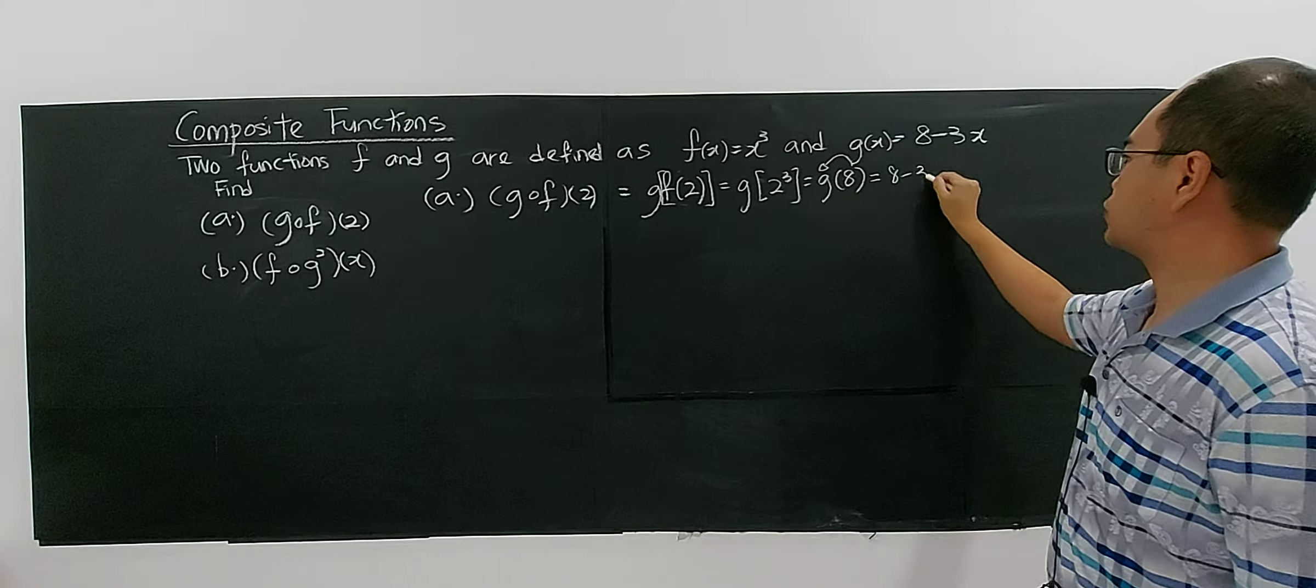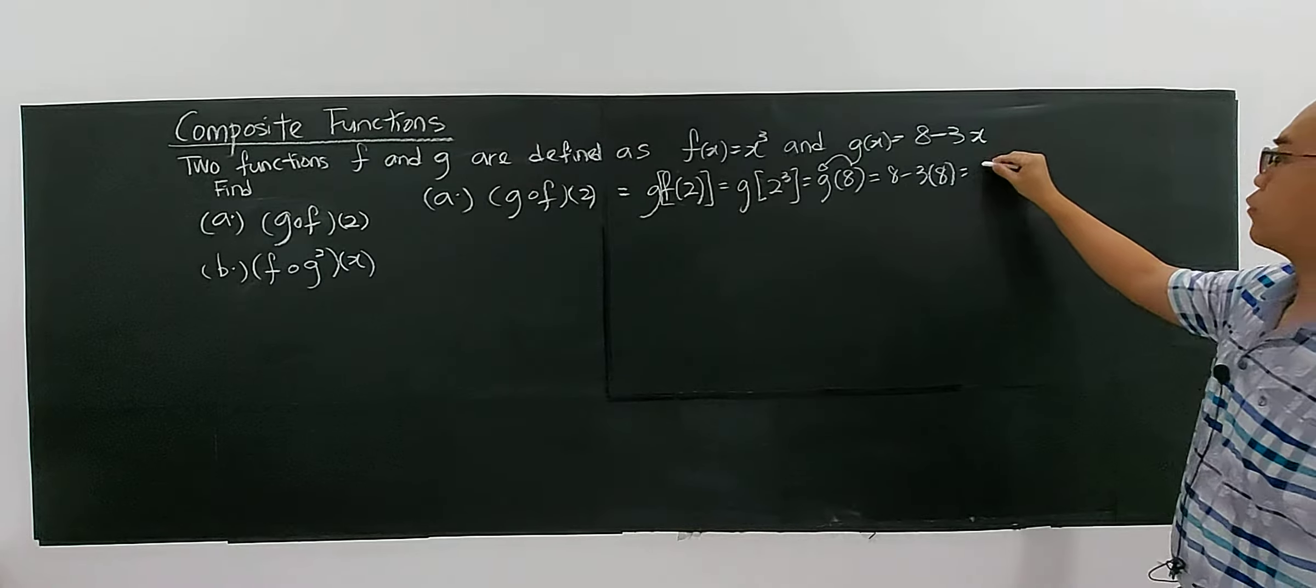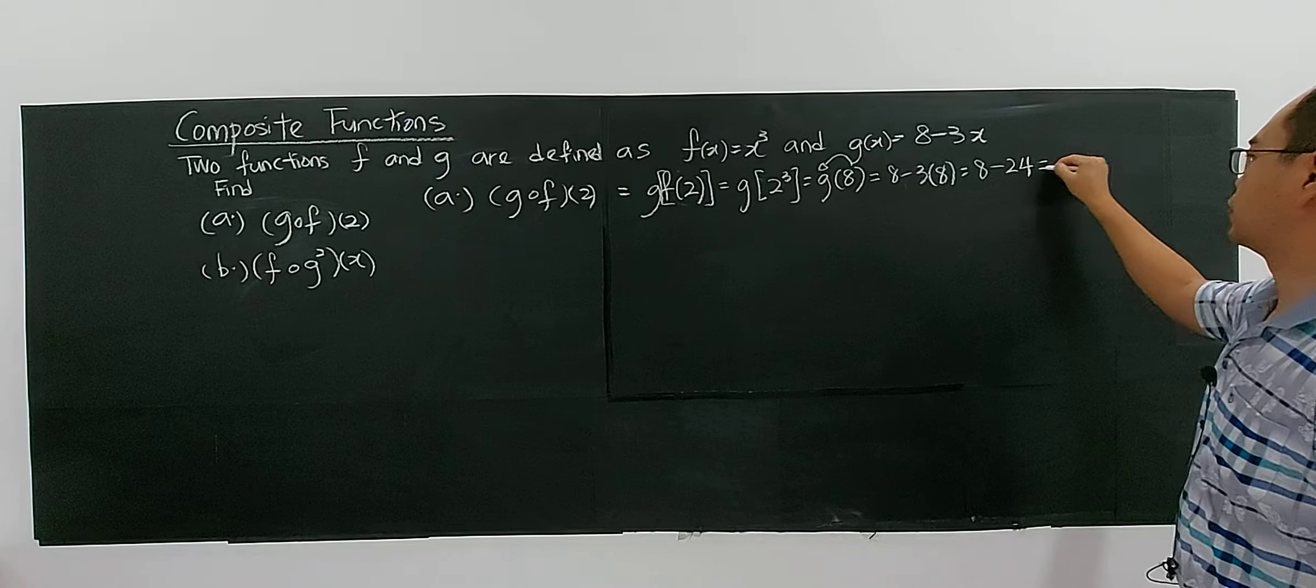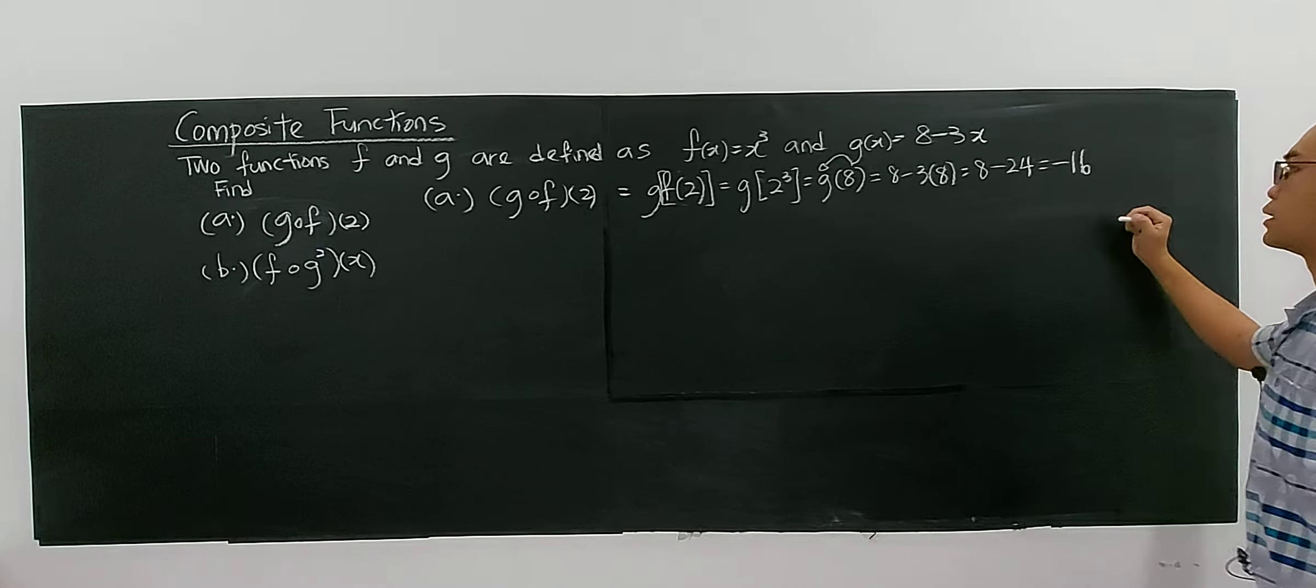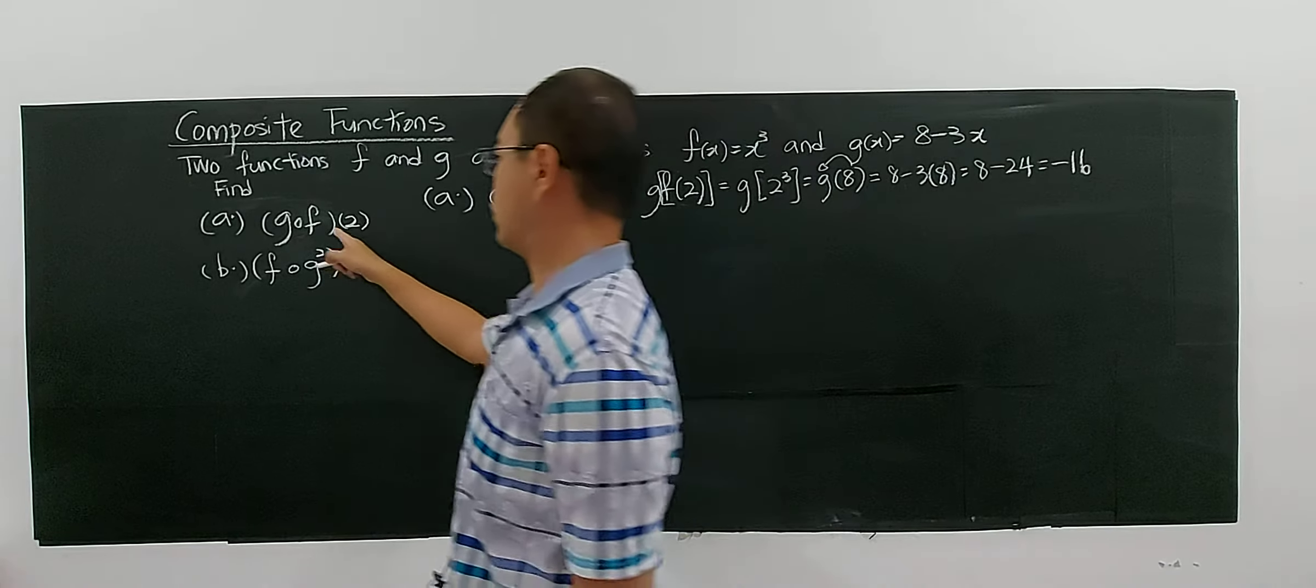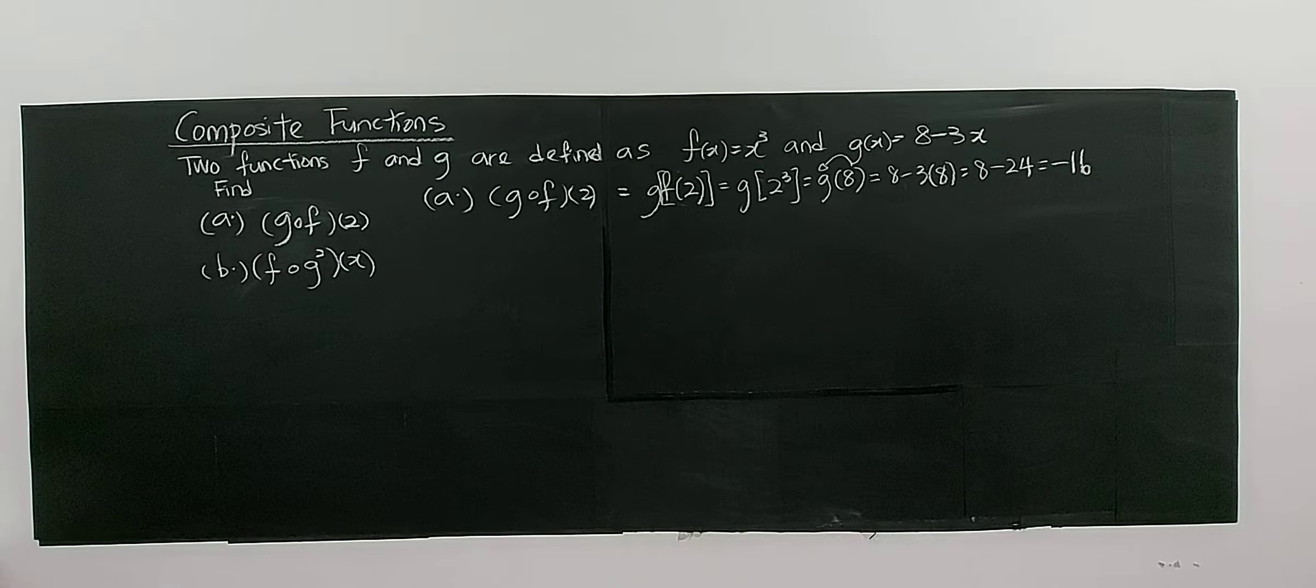So you put in g(8). You have 8 minus 3 multiplied by 8. As simple as that. So 8 minus 24 equals negative 16. That means the answer for this will be negative 16.